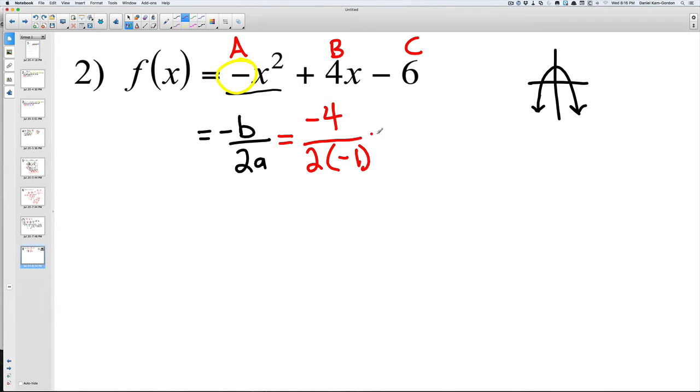A negative divided by a negative makes a positive, so we have two. So this is our x value. And then we go ahead and plug that back in for x, so instead of saying f(x) we're going to say f(2).